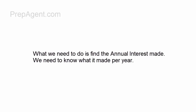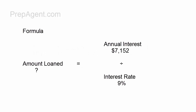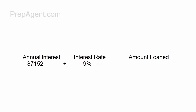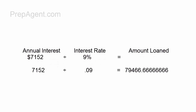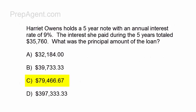What we need to do is find the annual interest made — what it made per year. So that's $35,760 divided by 5, which gives you $7,152. We divide that by the interest rate of 9%, so $7,152 divided by 0.09 will give you $79,466.67 once you round it off. That was pretty simple.